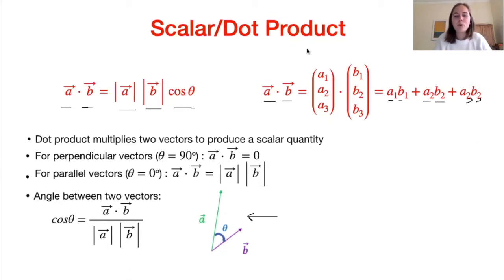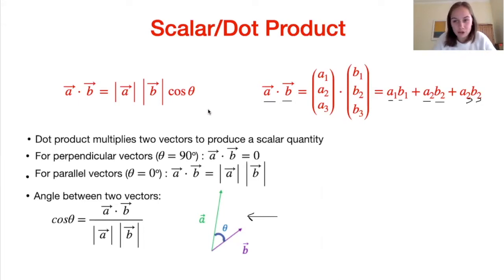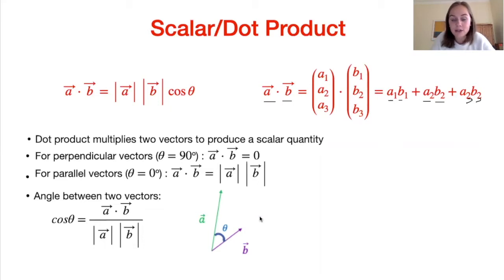A couple of really important results follow from this. From the first formula, when θ is 90 degrees — i.e. when a and b are perpendicular — the dot product is zero. That's a really important result to remember. Also, for two parallel vectors when the angle between them is zero, the dot product equals the product of the magnitudes. Additionally, rearranging the first formula to make cos θ the subject gives us a relatively simple formula to find the angle between two vectors.